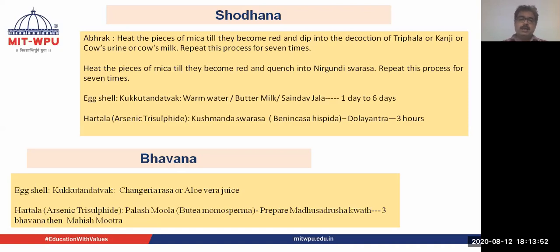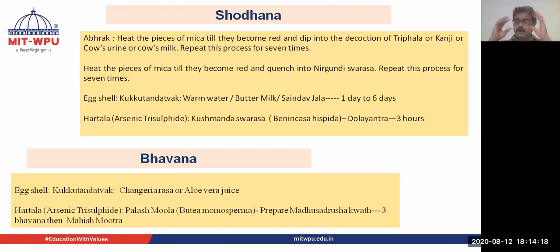For purification of Haritala (arsenic trisulphide), Kushamanda Swarasa from Benincasa Hispida is mentioned. This is done in the Dholayantra: an earthen pot is taken, the arsenic trisulphide is placed in a bag called a sportly and tied properly, then hung into the earthen pot. It is filled with Kushamanda Swarasa so the sportly is immersed in the Swarasa, fire is applied so the Swarasa boils, and purification of the arsenic trisulphide or Haritala takes place.